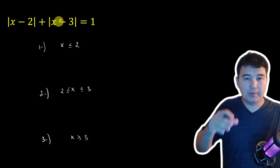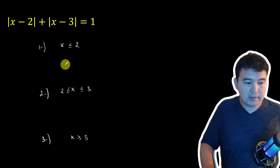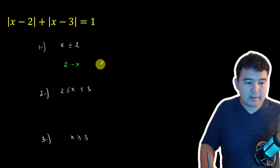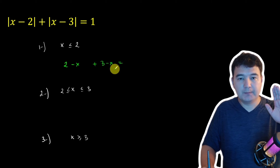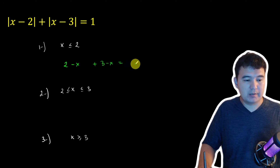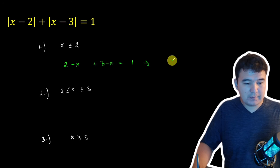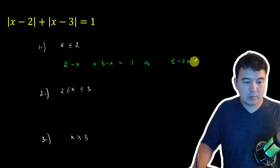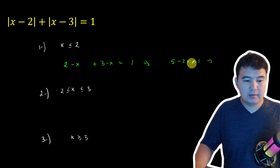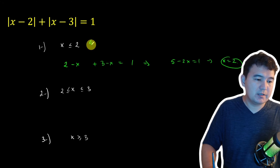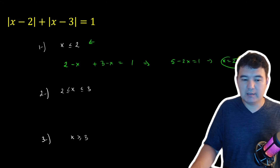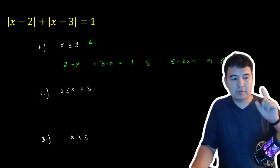When x is less than or equal to 2, opening the absolute values gives 2 minus x and 3 minus x. Subtracting the smaller from the larger equals 1, so 5 minus 2x equals 1. Solving this gives x equals 2, and this number satisfies our initial condition. So x equals 2 is our first solution.